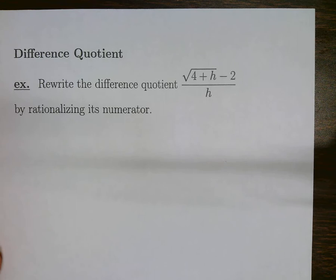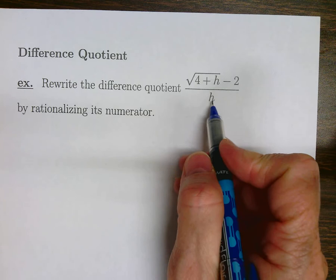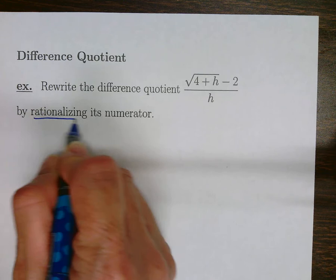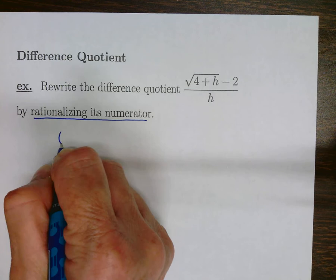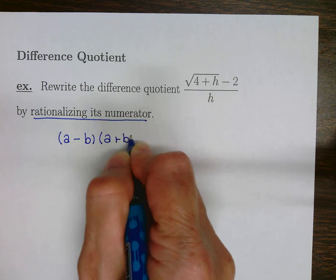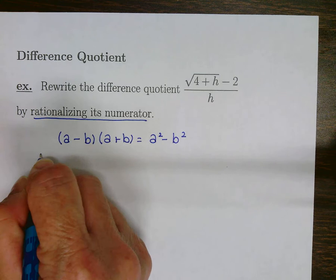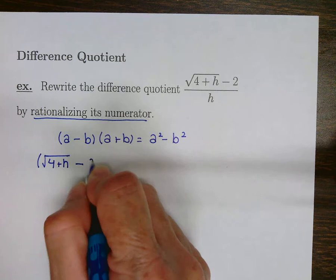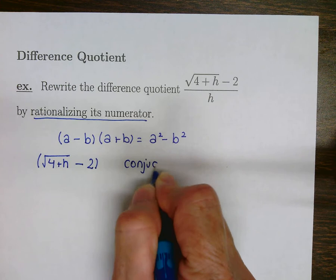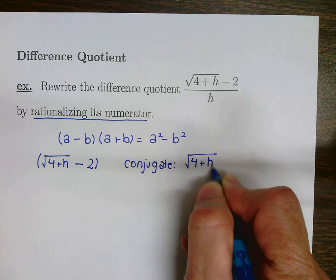We have one last example — something we're going to be calling a difference quotient. A difference quotient is just going to be the difference of terms; you'll recognize the h in the bottom. This time, all we want to do is rationalize the numerator. Remember how we rationalize the numerator or denominator? We use the special product (a minus b)(a plus b) equals a squared minus b squared and multiply by the conjugate. In this case, our a is the square root of (4 plus h) and our b is 2, so we're going to multiply by the conjugate, which changes the sign between the terms but not the sign in the radical or the 2.